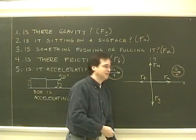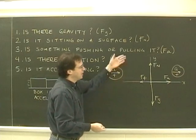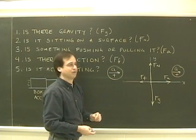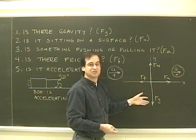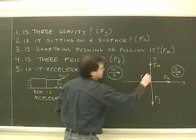In the up and down direction, well, if it's accelerating to the right, then in the up and down direction, it's not accelerating. So my ups and downs must add up to zero. So I've got two forces, so it's going to be easy. Fn is up, Fg is down. They must be the same size, so I indicate like that. These are now the same size.